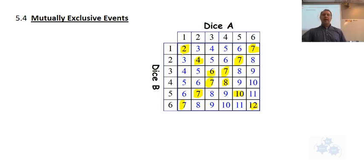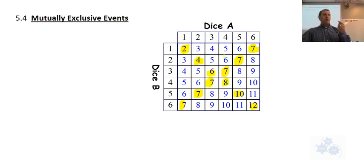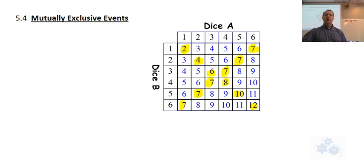Are there any squares colored twice — any that are both doubles and a sum of seven? No, they're all separate. So the favorable outcomes are the number of outcomes divided by the total number of outcomes. Let's use some notation here.